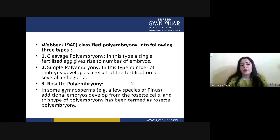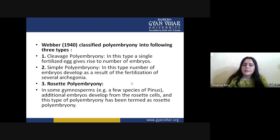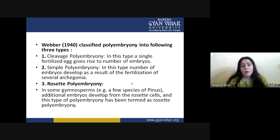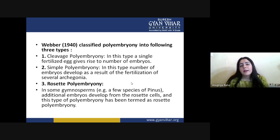The second type is simple polyembryony, which is a very natural kind mostly present in gymnosperms. In this type, the archegonia — a very productive part of the female gametophyte — can develop more than one egg cell, or more than one cell can get fertilized from the archegonia. If that particular plant has more than one fertilized cell from the archegonia, and these all develop into embryos, that kind of embryogeny generated inside the plant is called simple polyembryony.